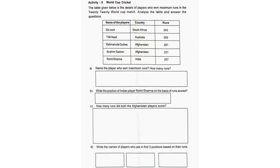Activity 6 - World Cup Cricket: The table given below shows details of players who won maximum runs in the 2020 World Cup match. Analyze the table and answer the questions. Columns: Name of the players, Runs.